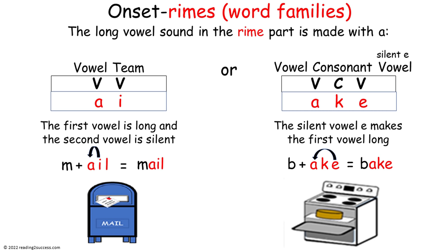In the first example, the vowel team is AI. The A is long and the I is silent to make the rhyme 'ale.' M plus 'ale' makes the word 'male.' In the second example, the VCV pattern A-K-E — the E is silent and makes the first vowel A long — makes the rhyme 'ache.' B plus 'ache' makes the word 'bake.'